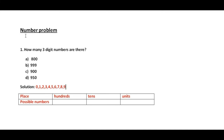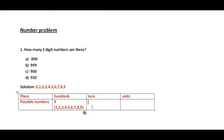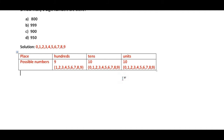Now we have to determine how many three-digit numbers there are. At the hundreds place, apart from 0, we can put any of the 9 numbers, so there are 9 possible digits. At the tens place, any of the 10 numbers can come. Similarly, at the units place, any of the 10 numbers can come. So the total possible three-digit numbers equal 9 × 10 × 10, which is 900.